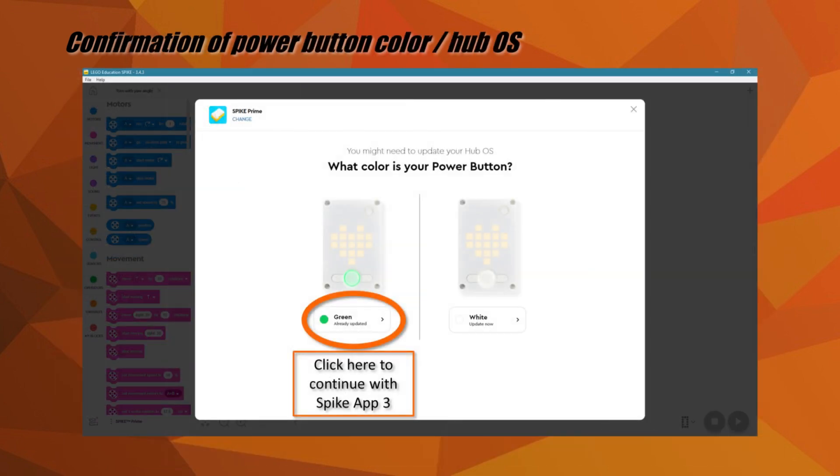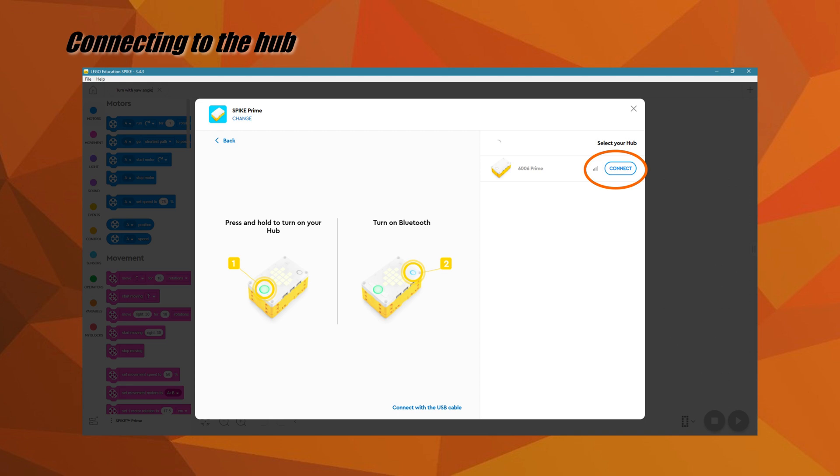With Spike App 3 and newer, at this step, the app will ask you to confirm that the hub has been updated to work with Spike App 3 by selecting the color of your power button. If your hub is updated, it should be green. If you are still using the Spike Legacy App, your power button should light up white. After confirming your hub OS as being Spike 3 by clicking the green power button option, follow the instructions to switch on the hub and Bluetooth.